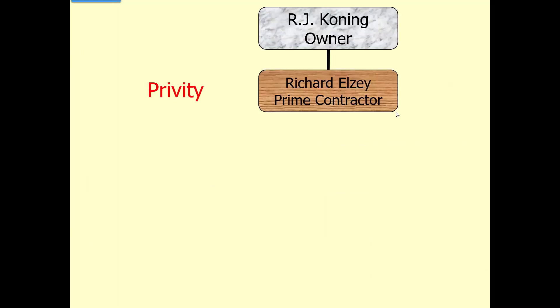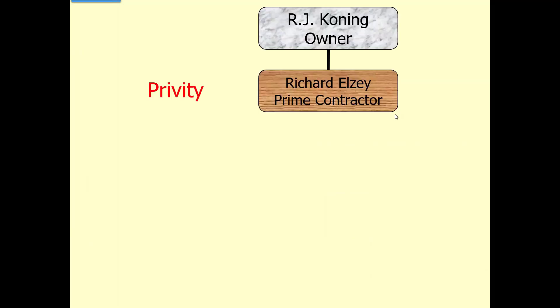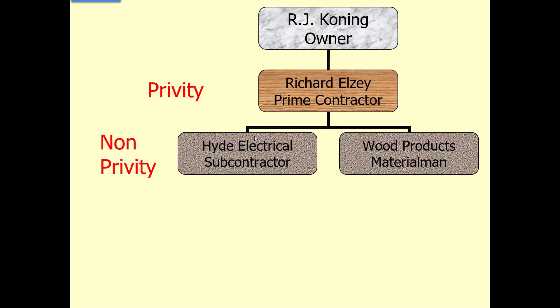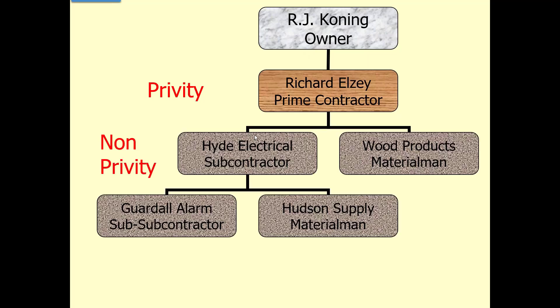We left off on who's a privity contractor and who's a non-privity contractor. Privity just means you have a direct contract with the owner, and a non-privity contractor is one whose contract is with a contractor who's not the owner.